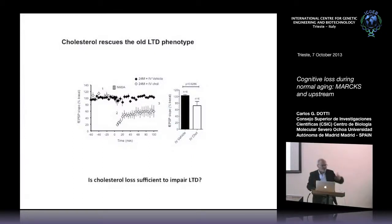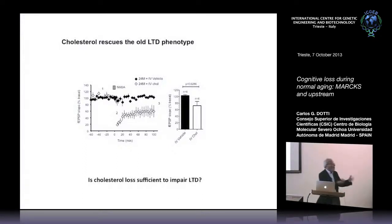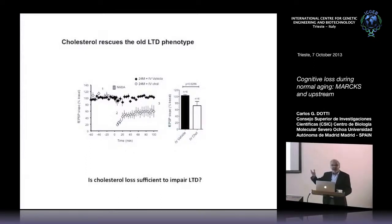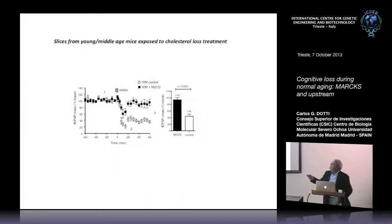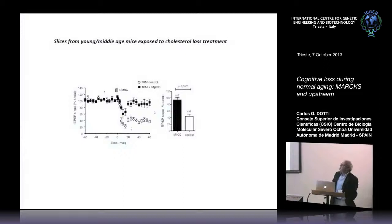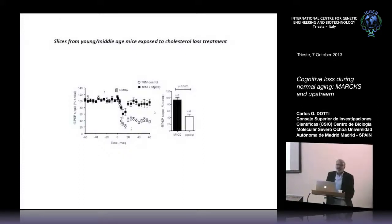Is cholesterol loss sufficient to impair LTD? You take a young animal, remove cholesterol, and see if you get the same effect as in an old animal constitutively. The answer is yes: 10-month control animals have a very nice LTD after NMDA application, but young animals in which you have removed cholesterol now have an LTD deficit as if they were old. So you see young animals behaving like old ones — which starts to make you think why that could be.